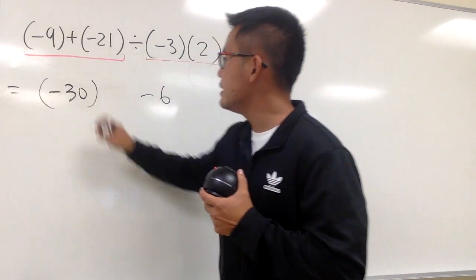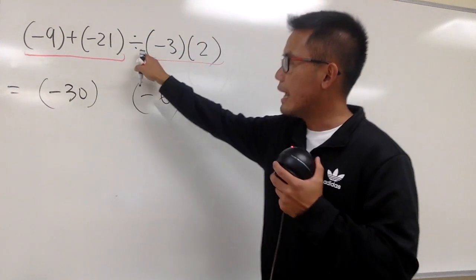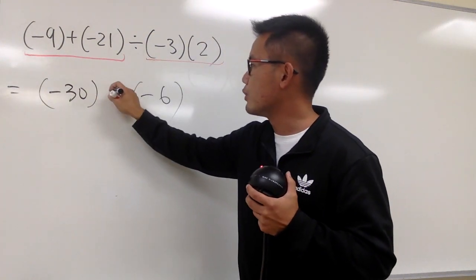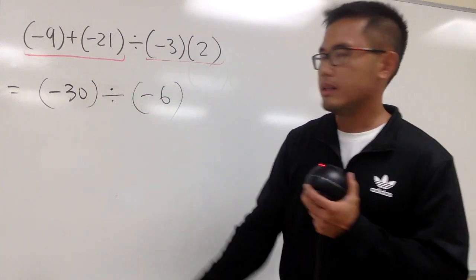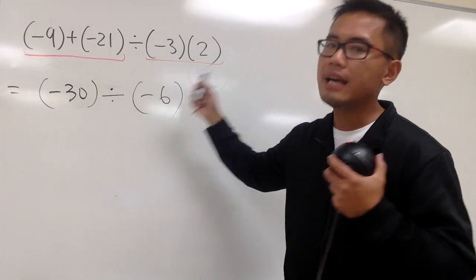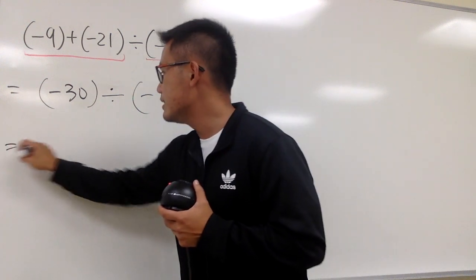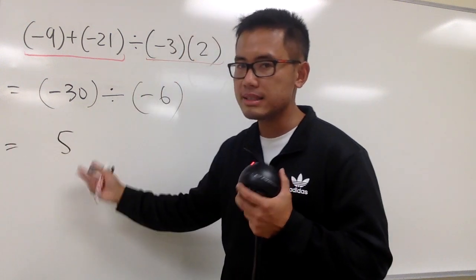And we are going to put this in parentheses, we'll also put this in parentheses, and then we'll bring down the division right here. At the end, negative 30 divided by negative 6, we get what? Well, the answer is just going to be positive 5.